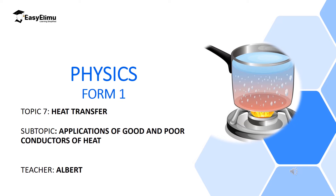Welcome to ECELIMU Learning Simplified and welcome to this lesson. In the previous lesson we discussed good conductors of heat and poor conductors of heat. Then we discussed lagging as a process of preventing heat loss from poor conductors of heat. Now in this lesson we are going to discuss the applications of good and poor conductors of heat.